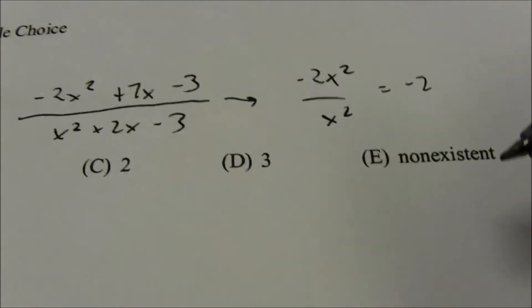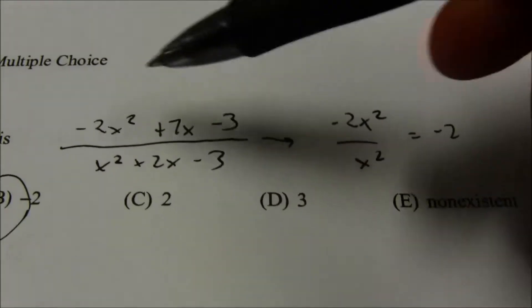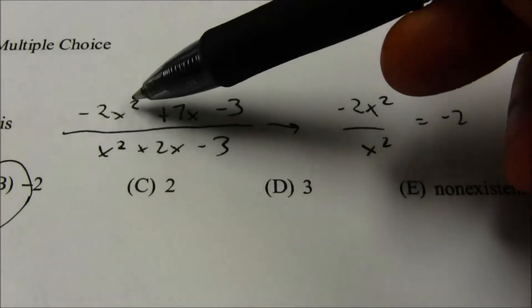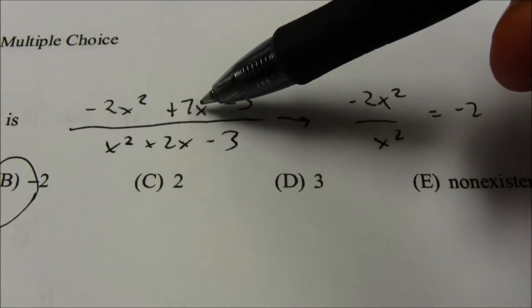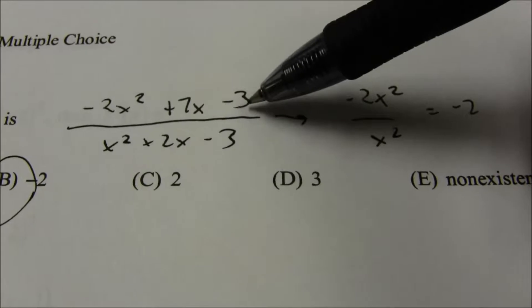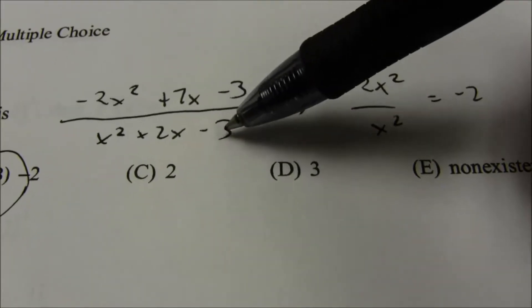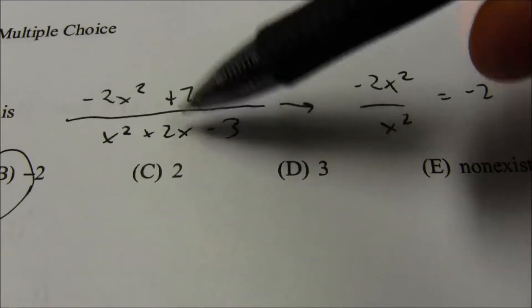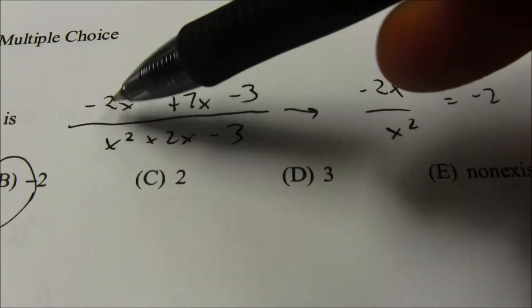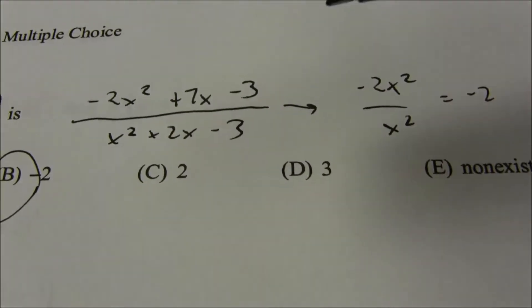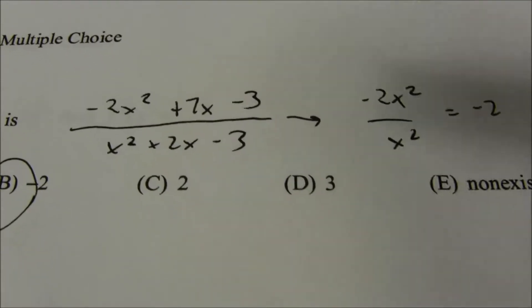In a pre-calc class, you may have been taught to divide everything by the highest power of x. So 7x over x squared goes to 0, negative 3 over x squared goes to 0, and if you divide both the numerator and denominator by x squared, you're left with negative 2 over 1.